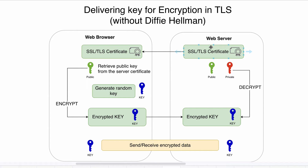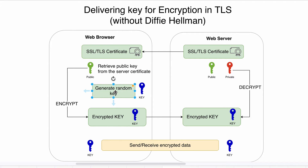After authentication, generation of the secure key starts — again, without the Diffie-Hellman algorithm. The web browser generates a random key, and after generation of this random key, it encrypts that key.